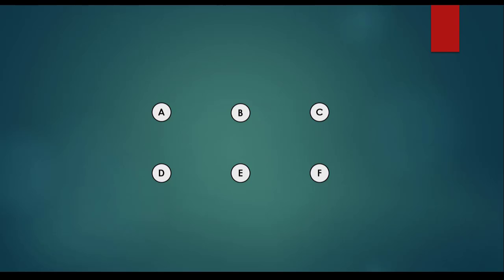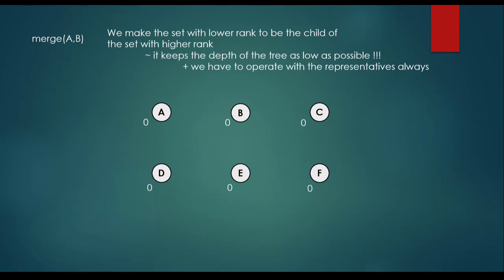We keep merging the sets together. We assign the rank parameter to all of these sets, and the initial value is 0. So in the beginning, all disjoint set items have rank 0. We make the set with lower rank a child of the set with higher rank, which is the union find property, keeping the depth of the tree as low as possible.